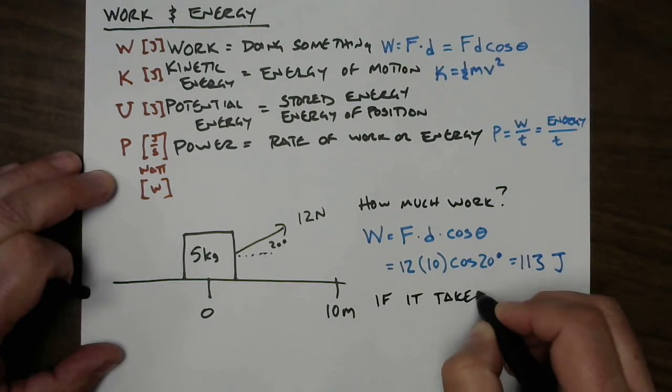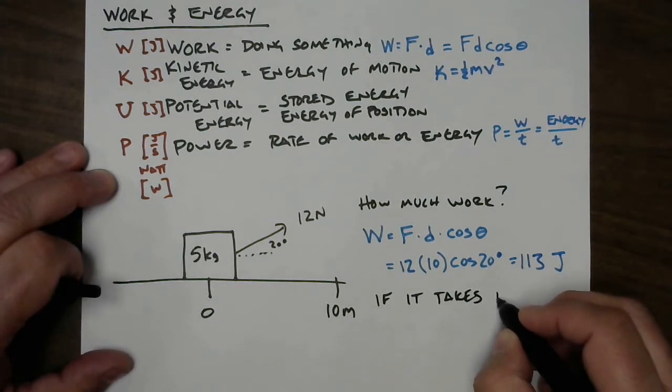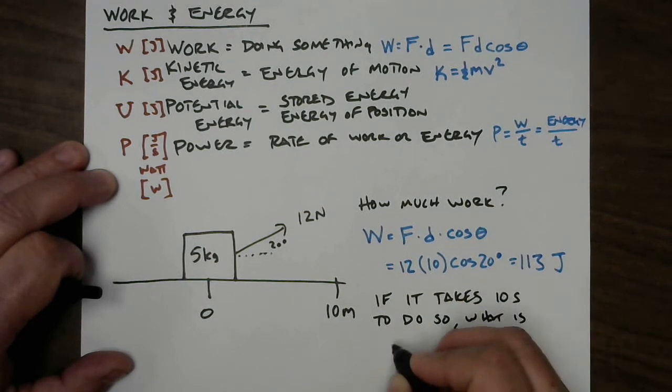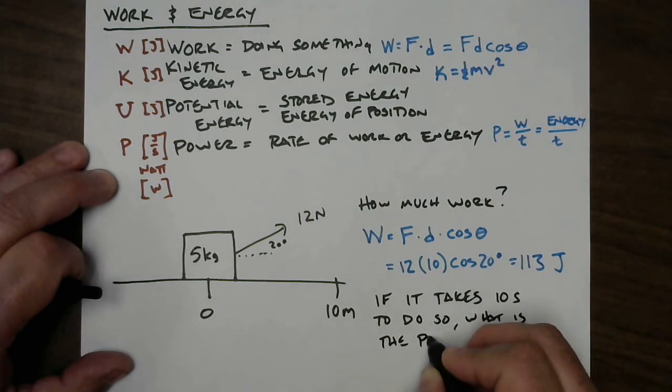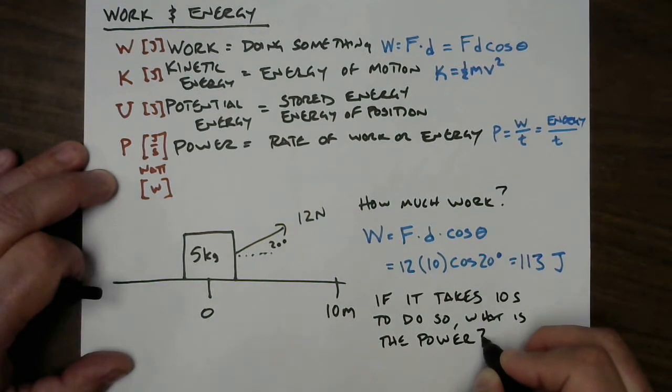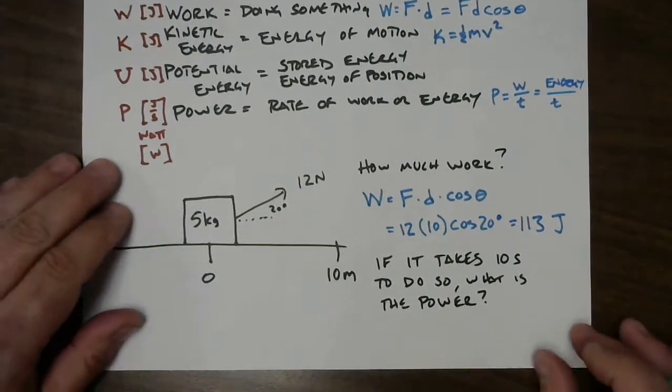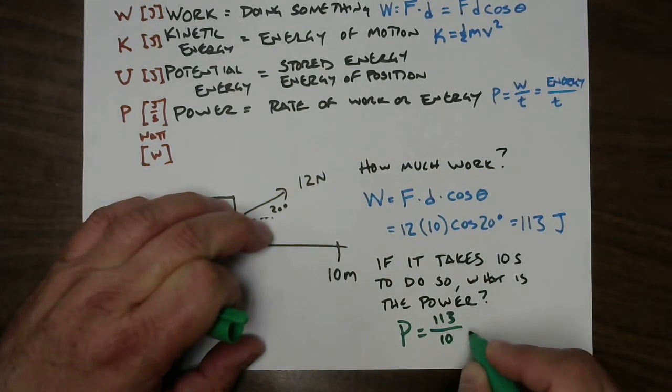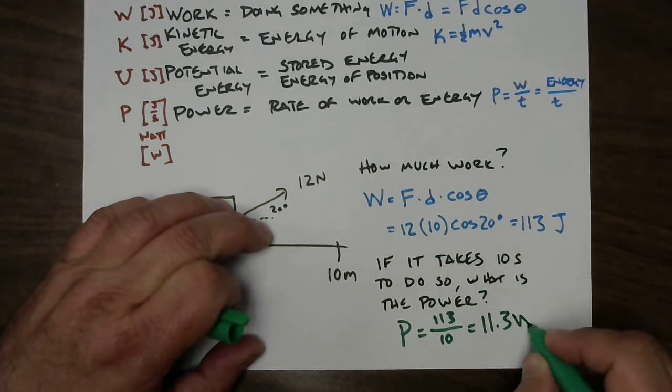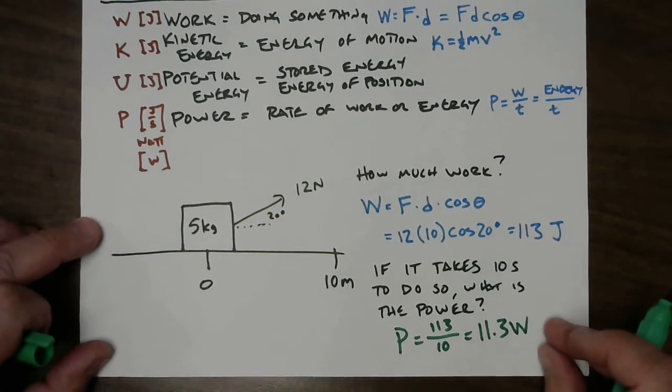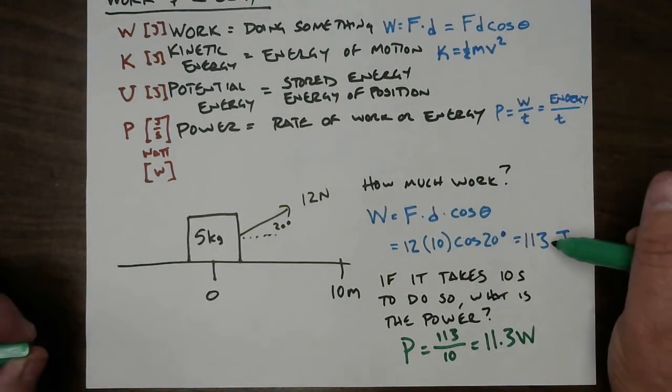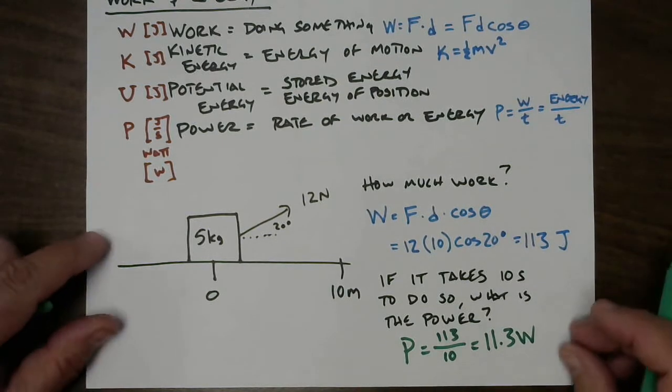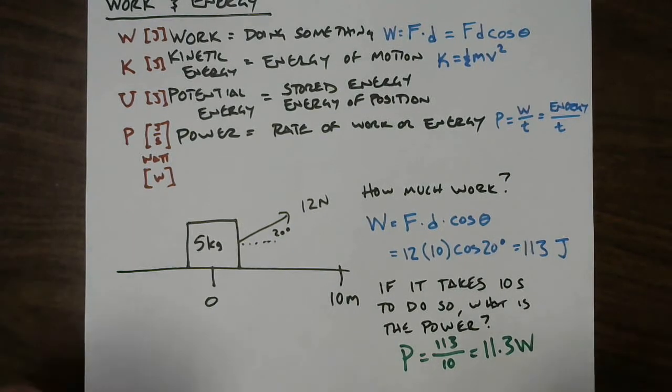If it takes 10 seconds to do so, what is the power? How much power have you exerted? In other words, what size electric motor would you need to get this particular job done? The power is just a rate, so we take our 113 joules and we divide it by the 10 seconds and we get that that's 11.3 watts. So, to drag this thing across the room, you would need to use 113 joules of energy and you would be developing or consuming 11.3 watts.